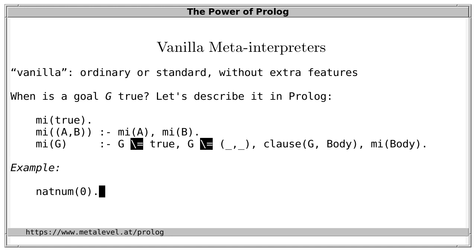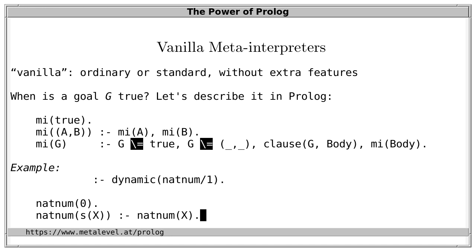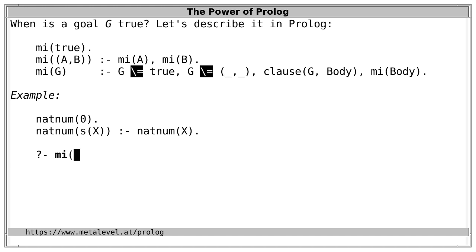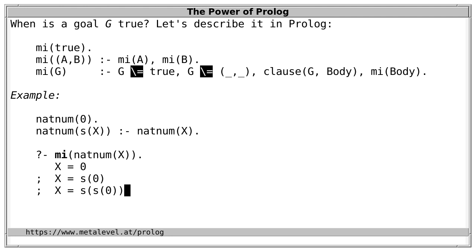For example, let's define a simple predicate 'natNum', defining what a natural number in successor notation is. Zero is a natural number. The successor of X, denoted by the term s(X), is a natural number if X is a natural number. We declare the predicate dynamic so the meta-interpreter can inspect this definition using 'clause'. Let's ask: does mi(natNum(X)) hold? Prolog tells us yes — for X = zero, X = s(zero) (one), also for two, and so on. It works.